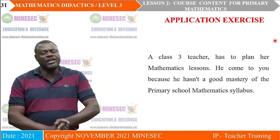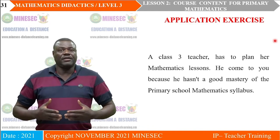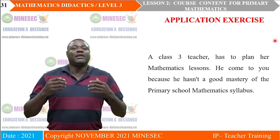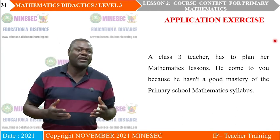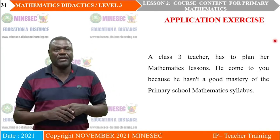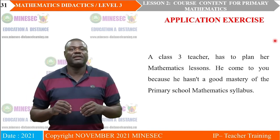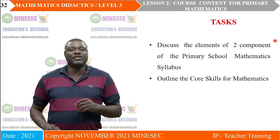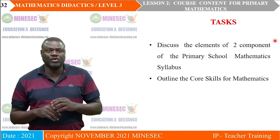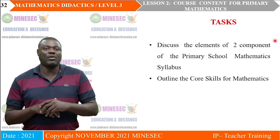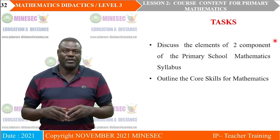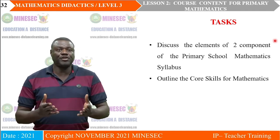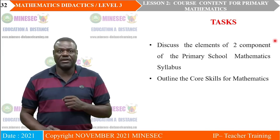Let us look at the application exercise to find out whether all what we have been discussing is understood. It reads: A classroom teacher has to explain their mathematics lesson. They come to you because you have good mastery of the primary school curriculum. Discuss the elements of two components of the primary school mathematics syllabus, and outline the core skills for mathematics. Take a few minutes to reflect on it, then we will discuss the answers.